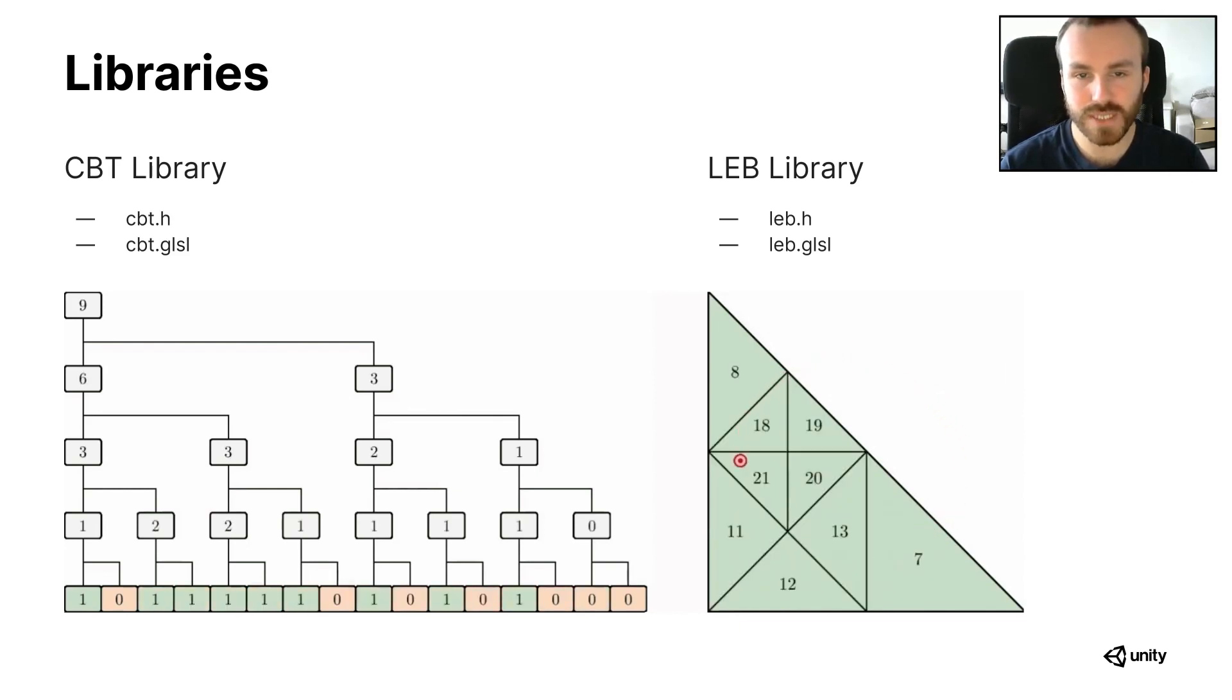The first library provides all the tools to manipulate the concurrent binary tree. So fetching data, splitting and merging nodes, and so on. The other implements all the code required to compute longest edge bisection schemes in parallel using a concurrent binary tree. So getting triangle vertices, subdivision rules for splitting and merging, getting sibling and parent nodes, etc. Of course we are mostly interested in their GPU versions, but having the CPU code at hand is useful for testing.